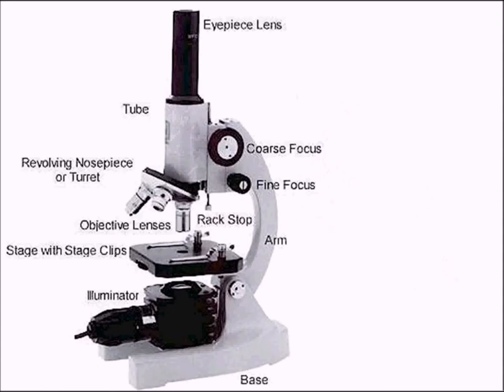Here's a microscope with all the different parts — let's look at what they do and how you would use it. At the bottom we have the illuminator, which we normally just call the light. There could be an electric light or a mirror to reflect light up into the stage with the clips, and this is where you put your slide which contains your specimen.